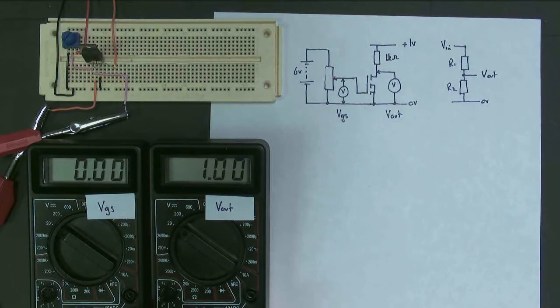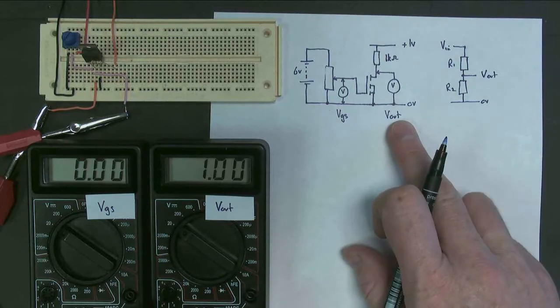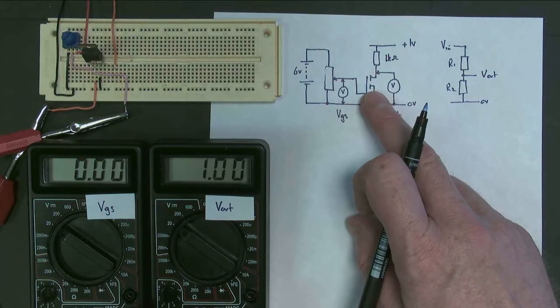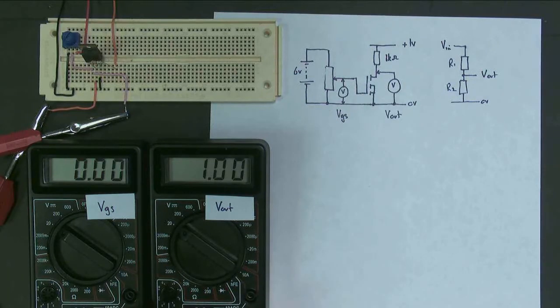And what we should find here is that we can vary our output voltage by varying the gate voltage because what we're doing effectively is making this resistor, this MOSFET, change its resistance. So let's have a look and see how that works out.